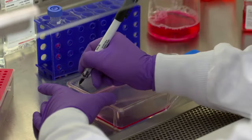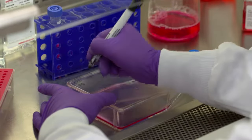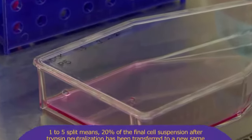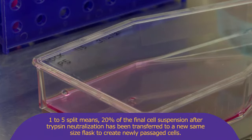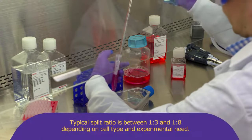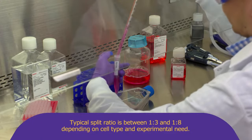For routine passage of cell lines with a known growth rate, it is not necessary to count cells. One can simply use a split ratio when passaging. For example, 1 to 5 split means 20% of the final cell suspension after trypsin neutralization has been transferred to a new same size flask to create newly passaged cells. Or in other words, cells from the original flask has been split into 5 equal size flasks. Typical split ratio is between 1 to 3 and 1 to 8 depending on cell type and experimental need.